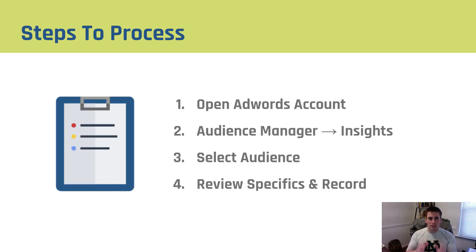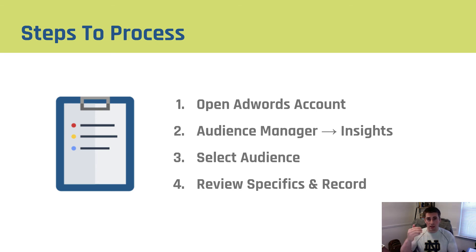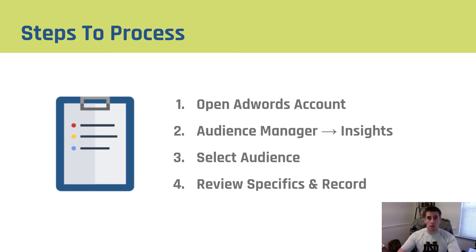So the steps of the process we're going to go through: first, open up your AdWords account. Then go into the new audience manager and check out the insights. Select the audience you want to review, review the specifics, and record them. That way you can transfer that over to new ad groups and go through and test out each of these audiences individually. Let's head over to AdWords and I'll show you how to do this.